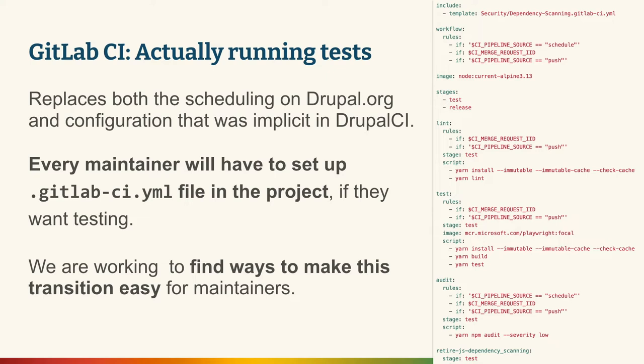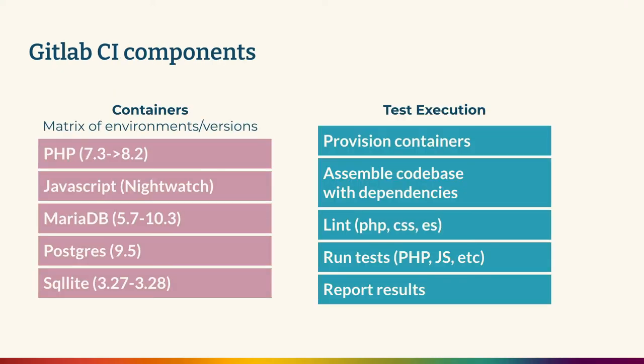We've already enabled GitLab CI for a handful of projects, and this is a screenshot of example code included in a GitLab CI file. GitLab CI is completely containerized, so those first few bootstrapping steps need to be done within containers. GitLab CI itself takes care of spinning up containers for testing, and then we define for test execution what we're going to be doing, how we're going to be doing it, and where we're going to look at results.